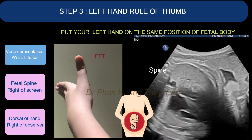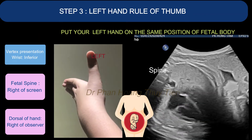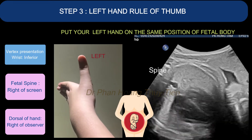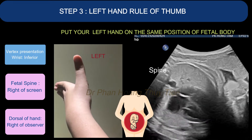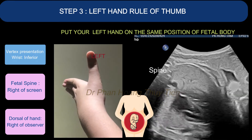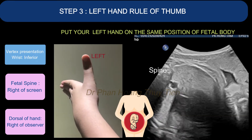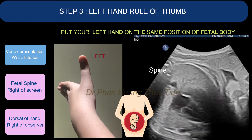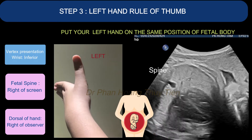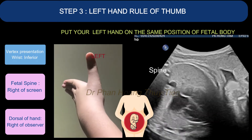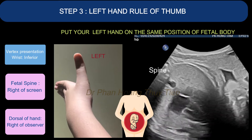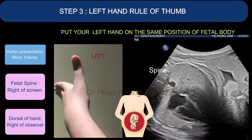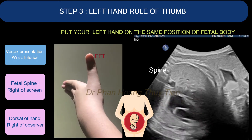please remember that since this is a vertex presentation, the wrist — which is the fetal head — will be inferior. In this example, you can see the fetal spine is at the right of the screen, so your hand dorsal will also be on the right of the observer.